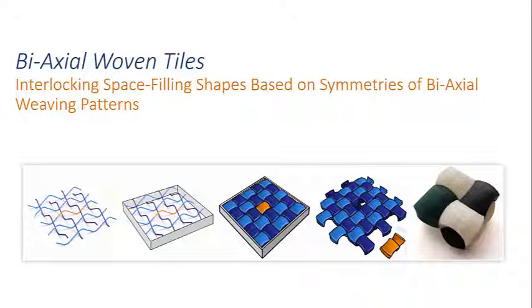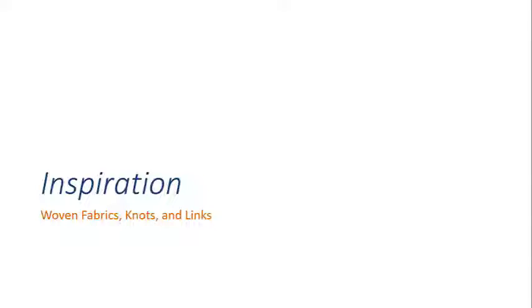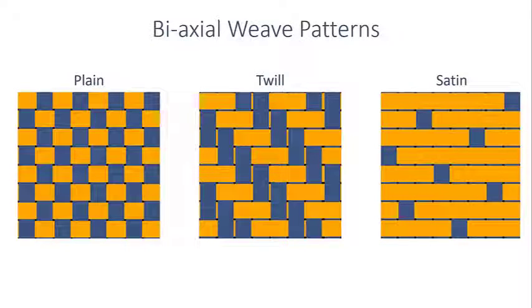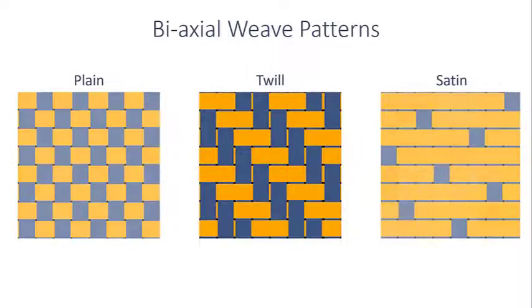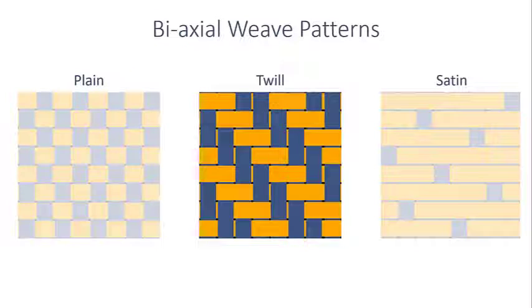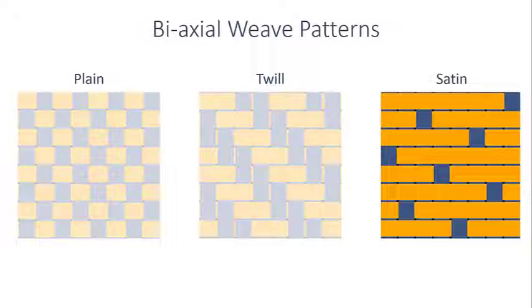We present biaxial woven tiles and interlocking space-filling shapes based on the symmetries of biaxial weaving patterns. Biaxial woven tiles are inspired by commonly used weaving patterns such as plain, twill, and satin as Voronoi sites for decomposing three-space.